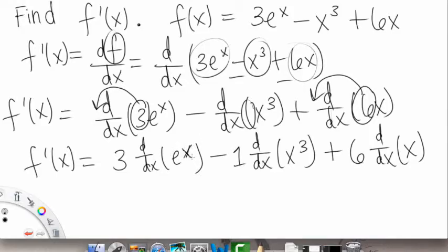Okay, so now we can use what we know about derivatives. So this will be f prime of x is equal to 3 times, and the derivative of e to the x, this is the special one, so it's just going to remain an e to the x. Okay, and the next one, we're going to use power rule, right?